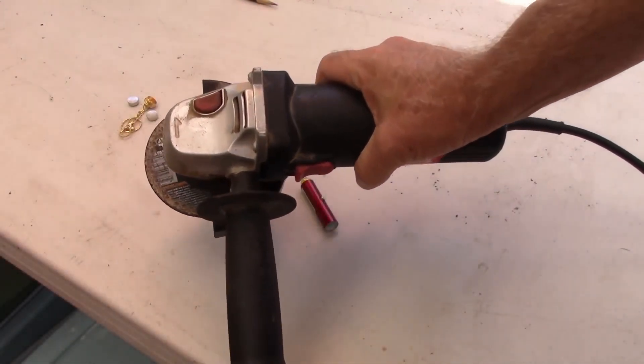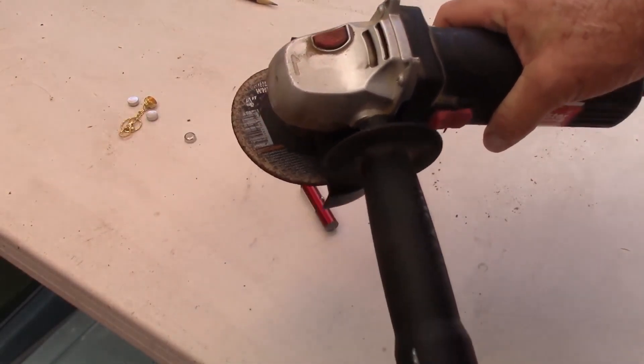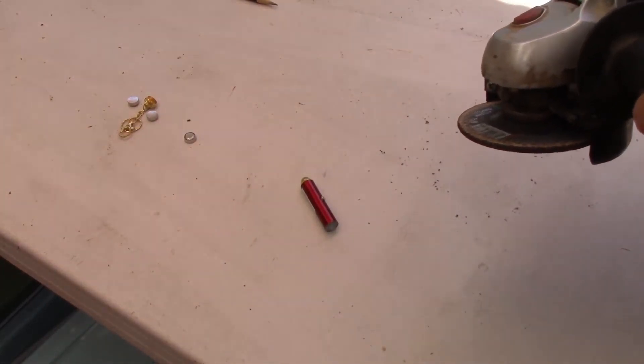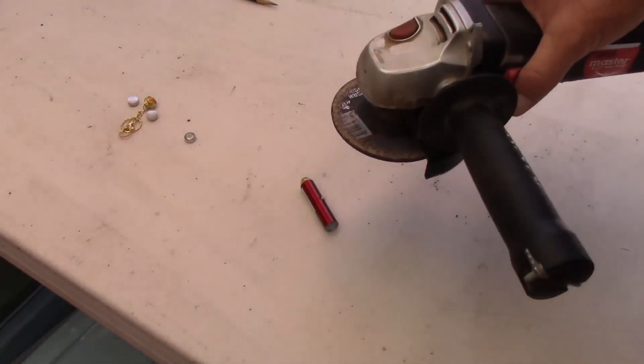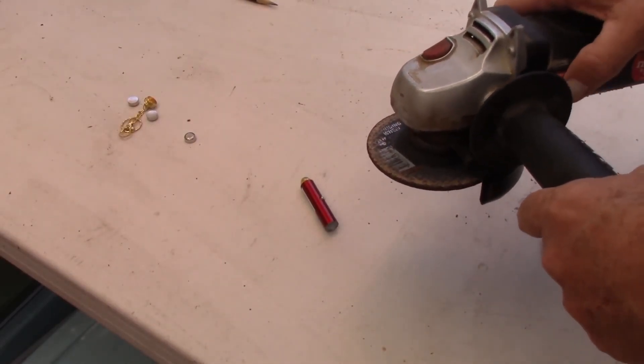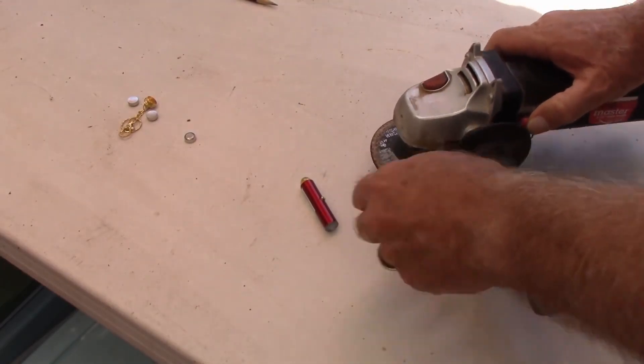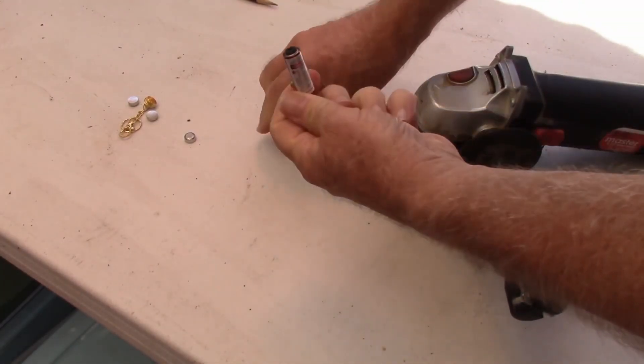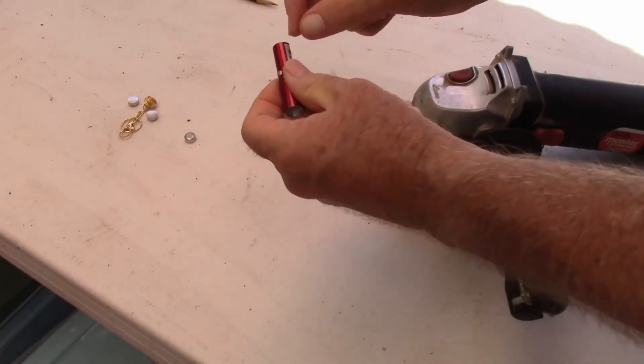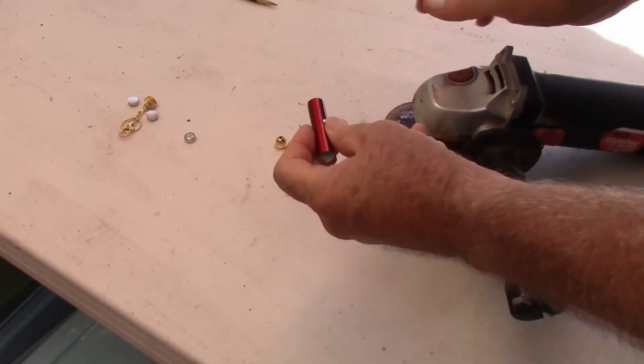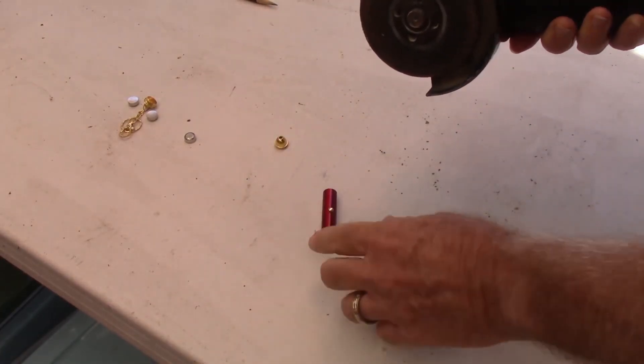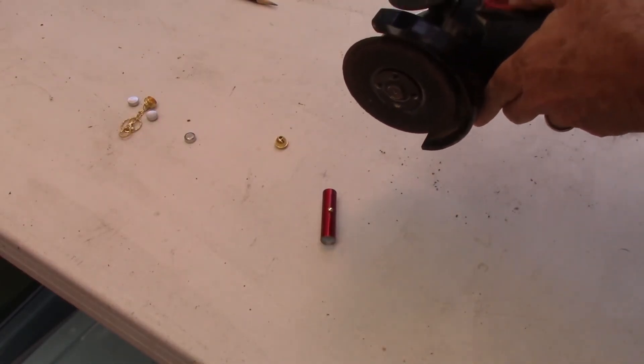Without further ado, yes, a bit of overkill here, but I want to do this quickly. I could use my Dremel tool and take half an hour. This will go through it pretty quick, so let's go ahead and take the clothes off of this laser pointer here. Let's start by taking the front off so we see where we have to work. Stand by for noise.